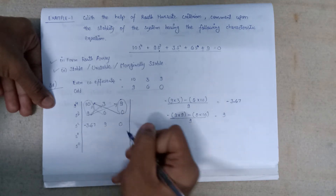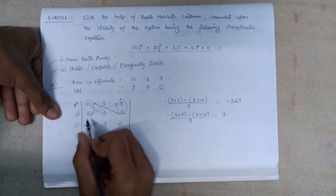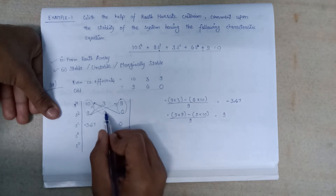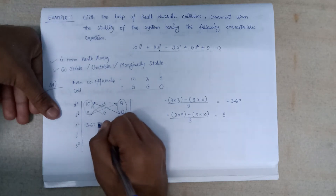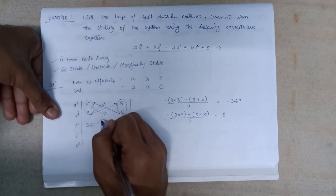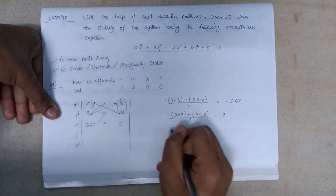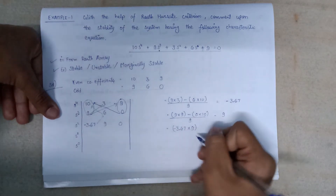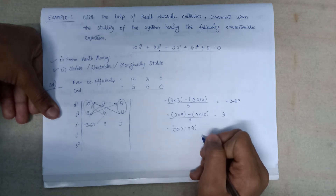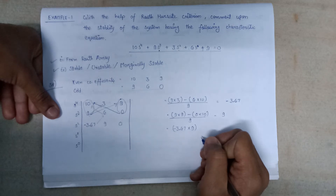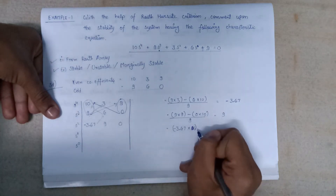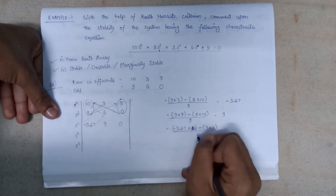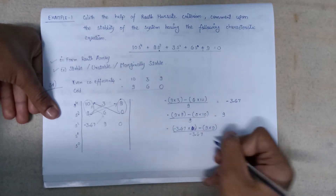Since no other column remains, we write 0. Moving to the next part: we take the elements 9 and minus 3.67, and multiply with the next column values 6 and 9. So minus 3.67 into 6, minus 9 into 9, the whole term divided by minus 3.67.